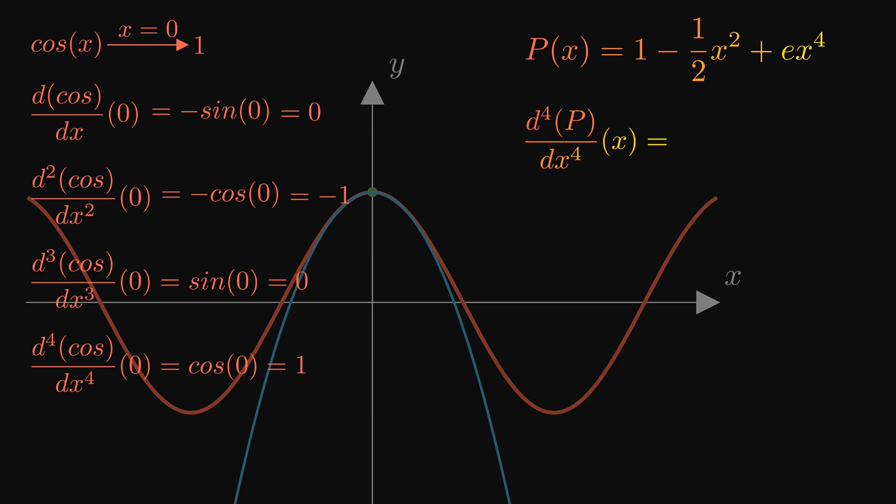In the polynomial's fourth derivative, all terms of degree less than 4 will become 0, so we only need to consider the x to the fourth term. To take its fourth derivative, we bring the exponent down four times and decrease it each time. At the end, we're left with x to the 0, which is 1. Interesting, isn't it? Just as we encountered 3 factorial when we took the third derivative, now we get 4 factorial for the fourth derivative, that's 24.